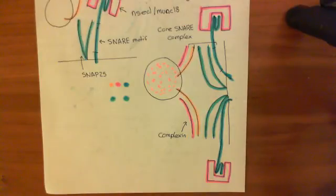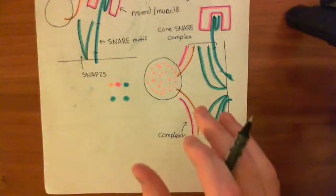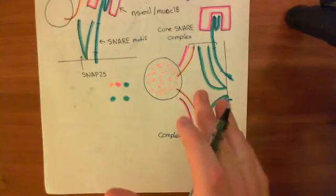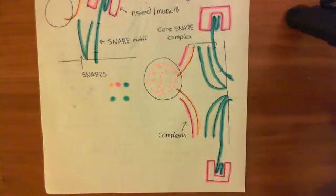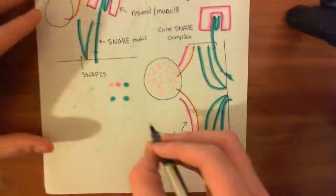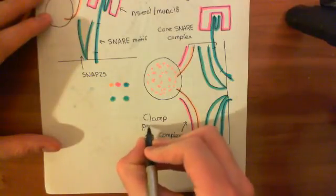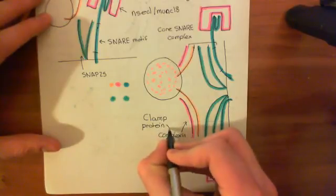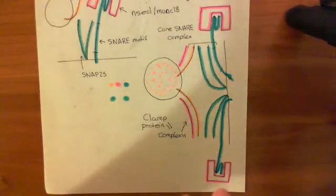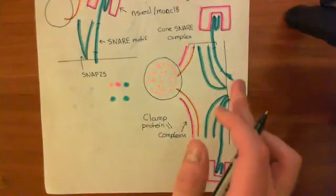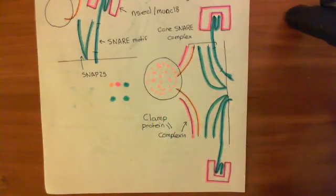And complexin's role seems to be in stopping these synaptic SNARE complexes from fusing the synaptic vesicle with the presynaptic membrane prior to an action potential arriving. So it appears to have this sort of clamping function. So it appears to act as a clamp protein. And it seems to stop these core SNARE complexes from actually bringing this synaptic vesicle membrane close enough to the plasma membrane that the synaptic vesicle is actually going to fuse with the plasma membrane.